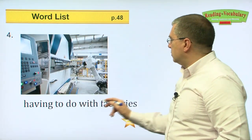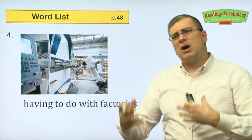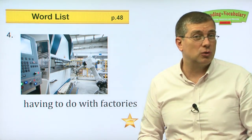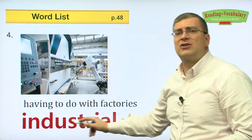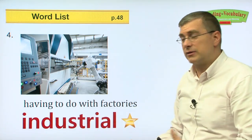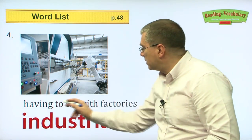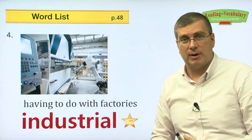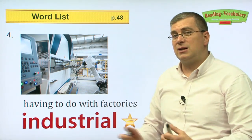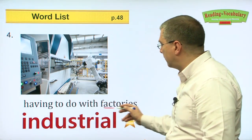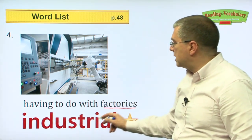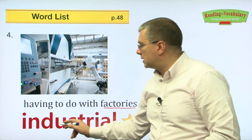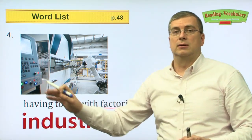Number four. Having to do with factories. When we talk about factories making things and machines — the process of manufacturing — we are talking about industrial topics. Industrial is an adjective meaning having to do with factories. This job is an industrial job. This business deal is an industrial business deal.